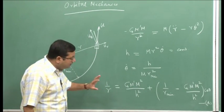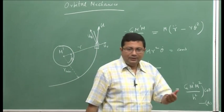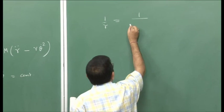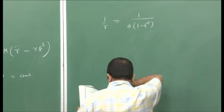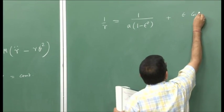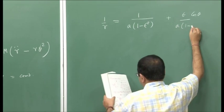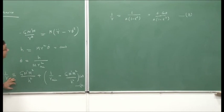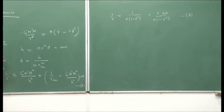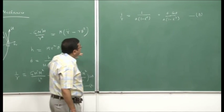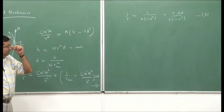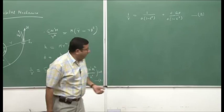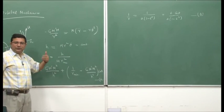Last time we had started discussing conic sections. The general expression for a conic section is 1/r = 1/[a(1−ε²)] + ε·cos(theta)/[a(1−ε²)], which we call equation B. Comparing equations A and B — A was derived from force balance and B is the general conic section equation — these two expressions are very similar. Therefore, we can equate the corresponding terms directly to obtain the design parameters for our rocket design.